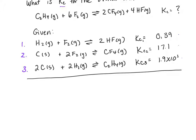So what I see on the reactant side of our overall equation is that we have C2H4. The only place that shows up is in Step 3 on the product side. So I'm going to reverse that reaction. I'm going to reverse Step 3. And so I'm going to have C2H4 gas in equilibrium with 2C solid plus 2H2 gas.